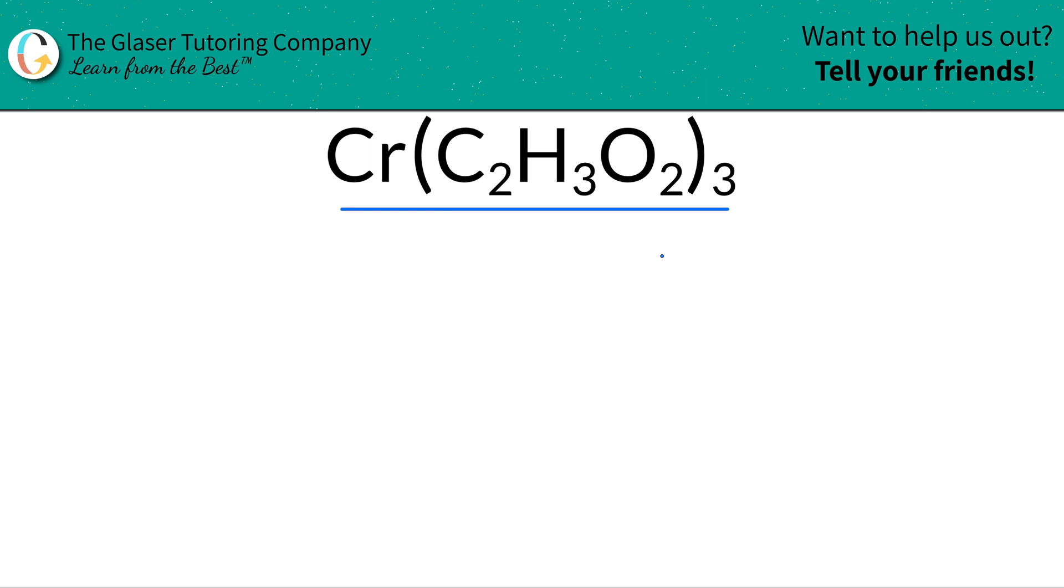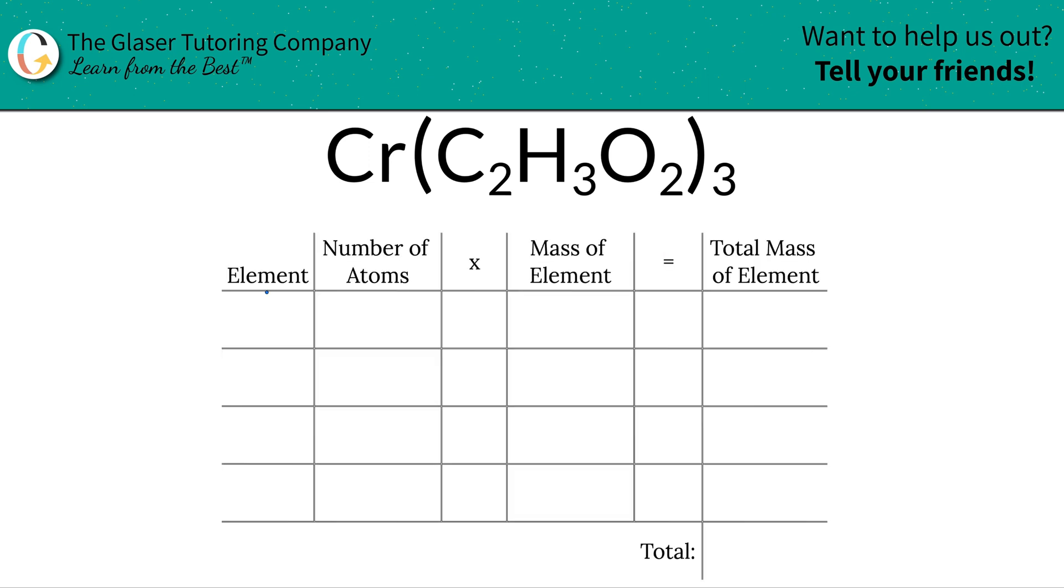So take a look at this table I've created to help us organize our thoughts. So the first thing I'm going to do is write down the elements I see in the compound. So I see chromium, carbon, hydrogen, and oxygen.